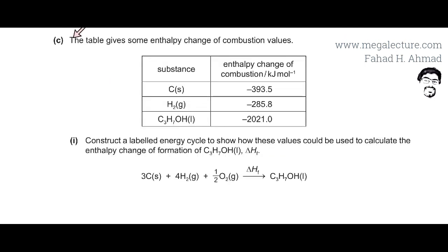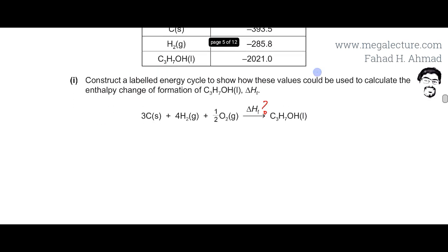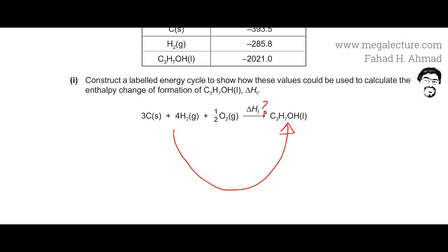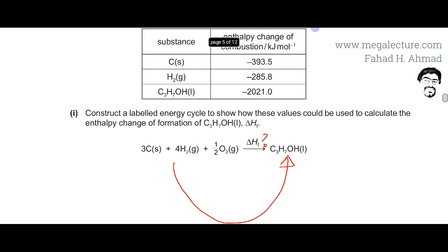Part C: a table gives standard enthalpy change of combustion values for carbon, hydrogen, and propanol (C₃H₇OH). We are asked to construct a labelled energy cycle to show how these values can be used to calculate the enthalpy change of formation of propanol using Hess's law. We create an alternative path with the same starting and end points, and the energy changes along both paths are equal.